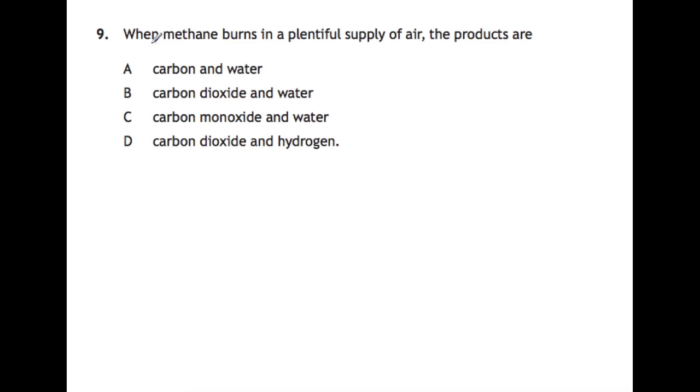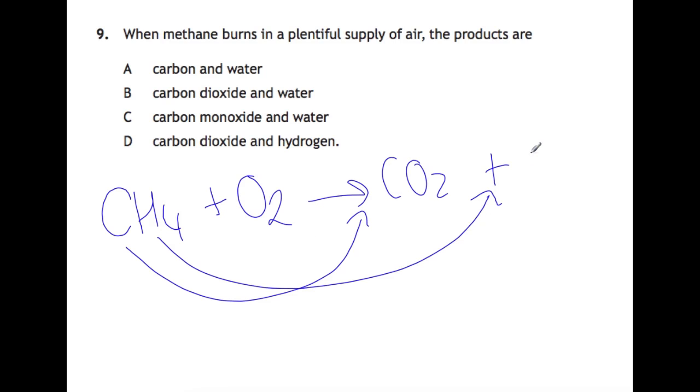Question 9. When methane burns in a plentiful supply of air, the products are what? So if we have methane, and we burn it in oxygen, all of the carbon will become carbon dioxide, and all of the hydrogen will become water. So your answer here will be B, carbon dioxide and water.